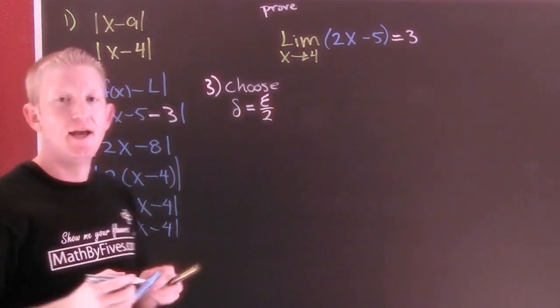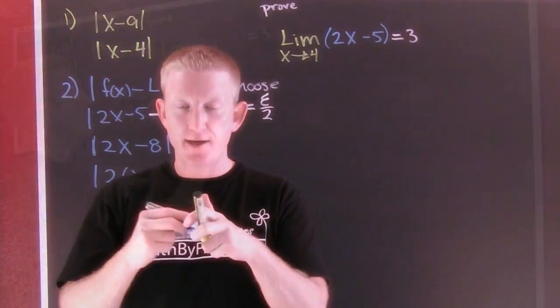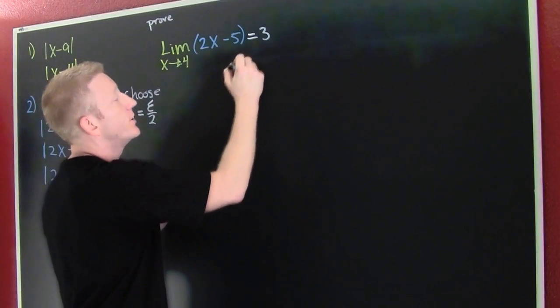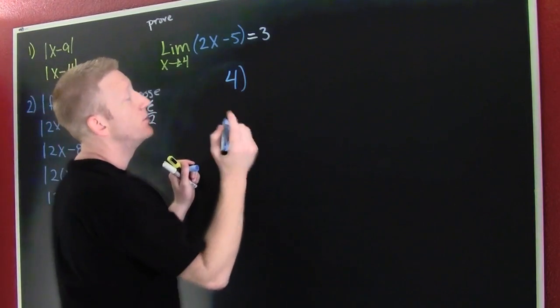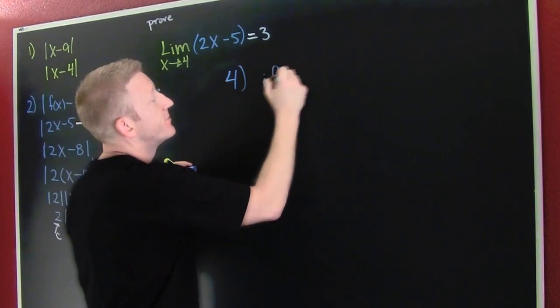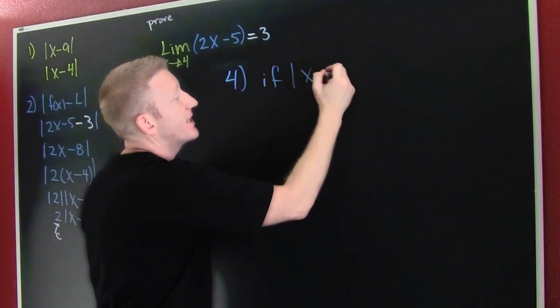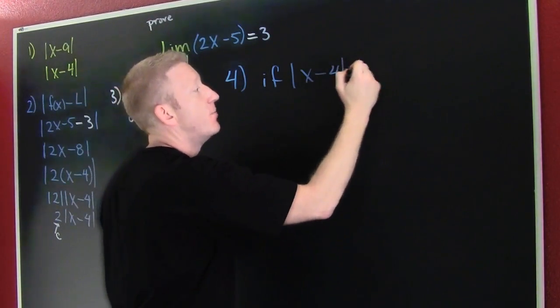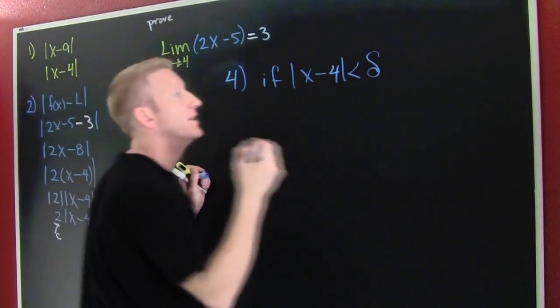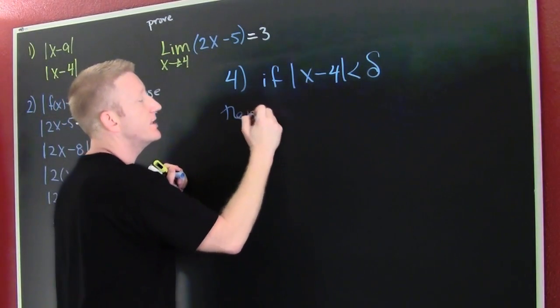Oh, and now it's time to summarize over here in part 4. Now this is where we make a summary. What do we state? We first start: if the absolute value of x minus my a, 4, is smaller than delta, then consider...